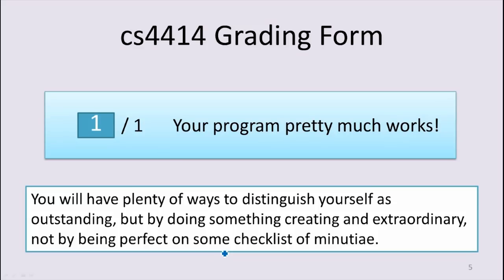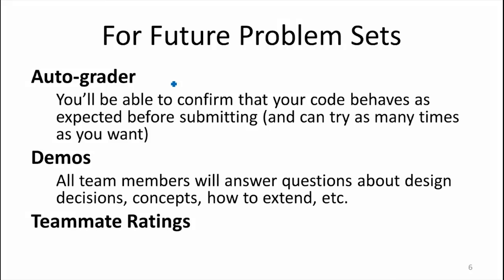This grading scale is not meant to deny you an opportunity to stand out. The way to distinguish yourself is to do something really creative and extraordinary, not by being perfect on a long list of tiny details. You'll have plenty of opportunities to do things that stand out, and scores can go higher than one — it's a real number scale. But don't be stressed: if you get things to work, you're going to get full credit. For future problem sets we'll have an auto-grader — you'll submit your GitHub repository to a web service, it will automatically run tests and give you feedback before the final submission deadline, so any ambiguity or repository setup issues can be fixed early.